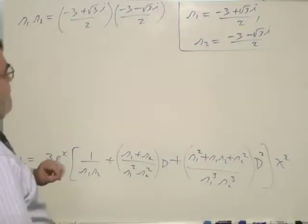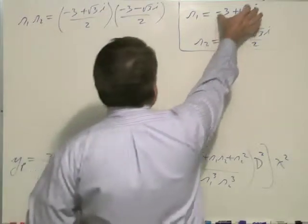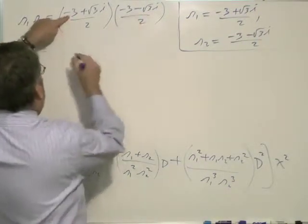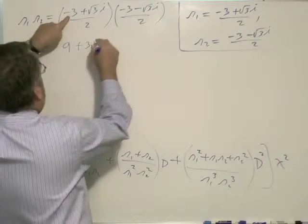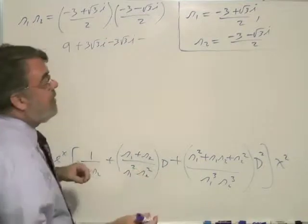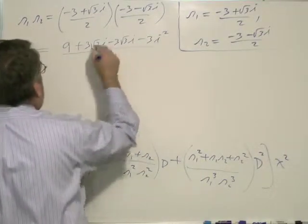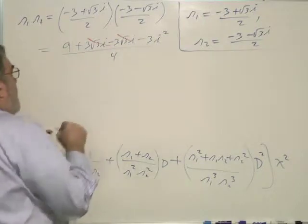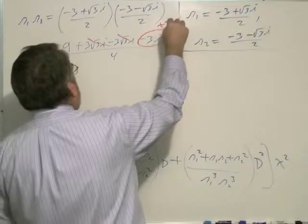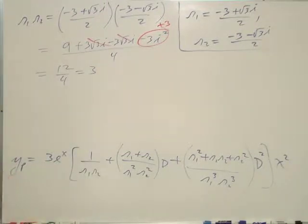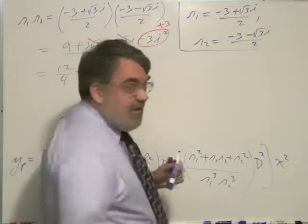Now we need to plug in those complex numbers. Let's first figure out r1 times r2. Multiplying the two complex conjugates: the numerator is 9 plus 3 sqrt(3)i minus 3 sqrt(3)i minus 3 i squared. The middle terms cancel, and minus 3 i squared becomes plus 3. So we get 9 plus 3 equals 12, divided by 4, equals 3. So r1 times r2 equals 3.